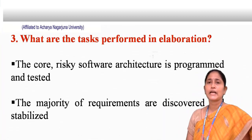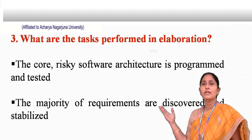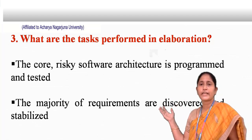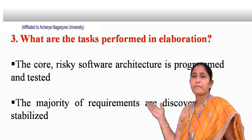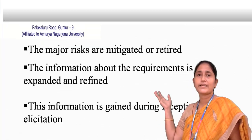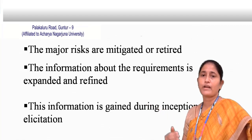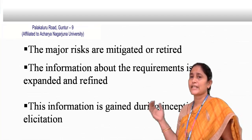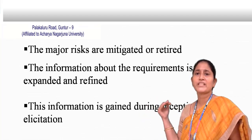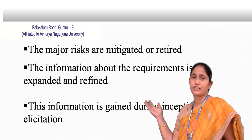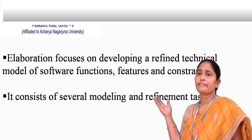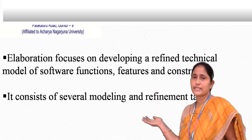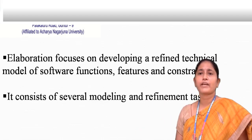The tasks performed in elaboration include: the core risky software architecture is programmed and tested; the majority of the requirements are stabilized, meaning made more stable; and the majority of risks are mitigated or retired, meaning we reduce the risks. The information about the requirements is expanded and refined — this information is gained during inception and elicitation. Elaboration focuses on developing a refined technical model of software functions, features, and constraints, and consists of several modeling and refinement tasks.